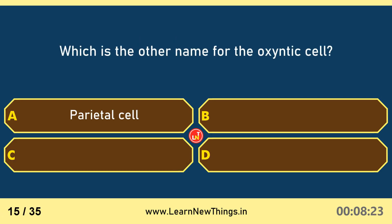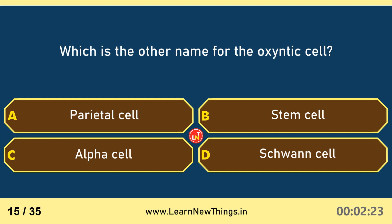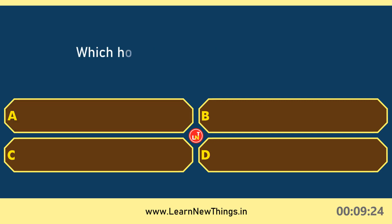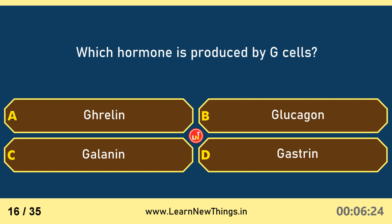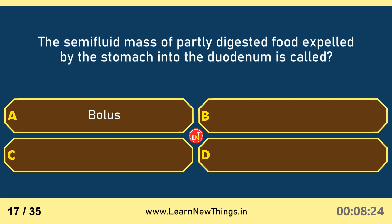The other name for the oxyntic cell is the parietal cell. The hormone produced by G-cells is gastrin. The semi-fluid mass of partly digested food expelled by the stomach into the duodenum is called chyme.